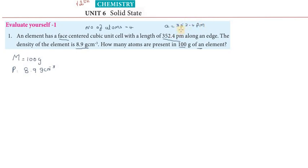So a cube, you know, a cube centimeter. The edge length is in picometer. We need to convert picometer to centimeter. So 352.4 into 10 to the power minus 12 meter. Then a cubed, it's 43.76 into 10 to the power minus 24 centimeter cube.